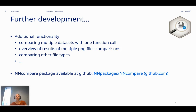We have some ideas for further development of this package. It could be useful to be able to compare more than one pair of data frames within a single function call. Furthermore, we would like to implement an overview of results of several PNG file comparisons. And finally, we could consider implementing functionality to compare other file types as well. The package is available at GitHub. Thank you for listening, and please let us know if you have any questions or comments.